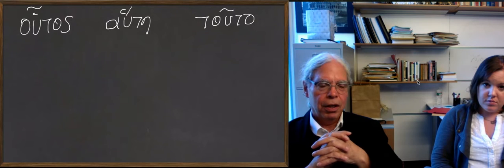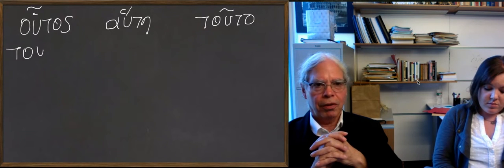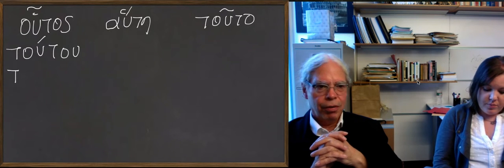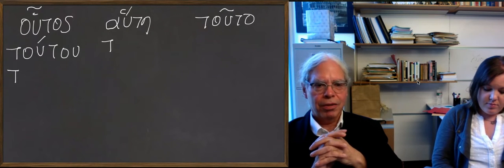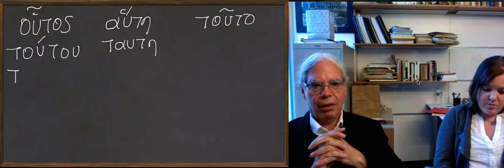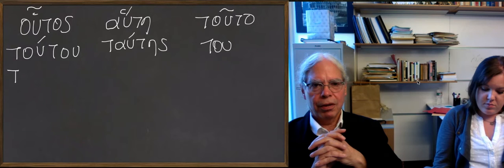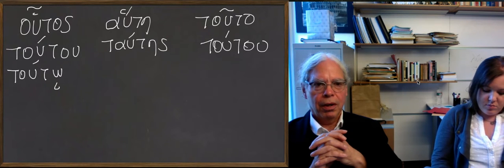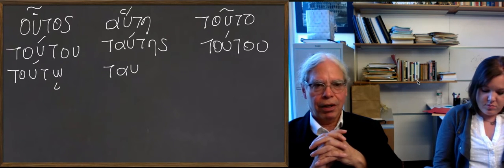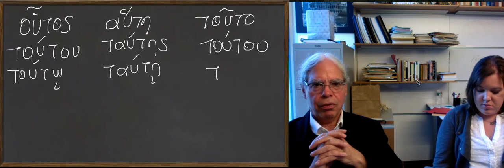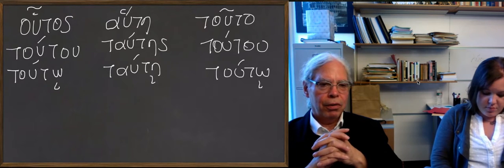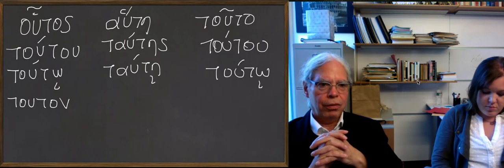So let's look at the genitive singular. It's toutou, with an acute accent on the u, first u. Toutou, tautēs. Okay, we want to do the dative. Okay, tautēs for the feminine. And then toutou with a meter. The dative singular is toutōi, with an omega and iota subscript. Tautēi, with an eta and iota subscript. And toutōi again, with an omega and iota subscript.